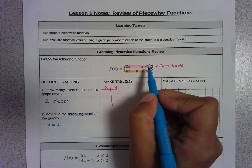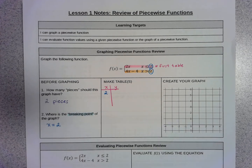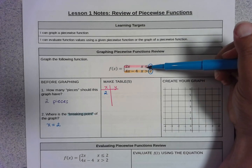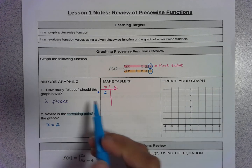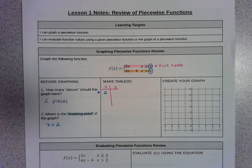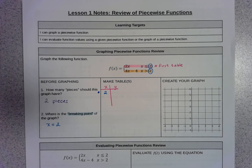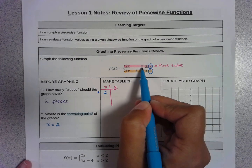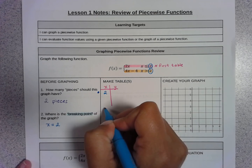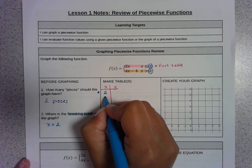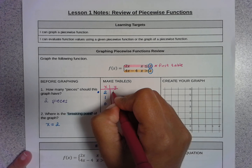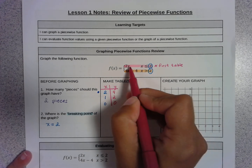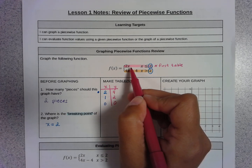Since the breaking point is x equals 2, I'll start with x equals 2. Because the first equation says x is less than or equal to 2, I'll put a closed circle at that point. I'll also choose x values less than 2, like 1 and 0. Plugging those into 2x gives y values of 4, 2, and 0.